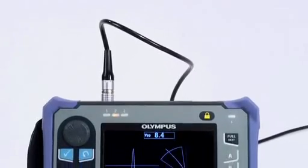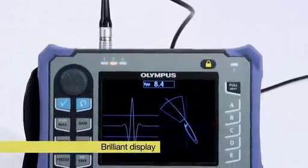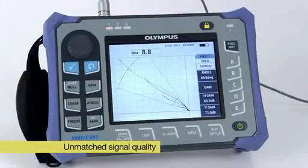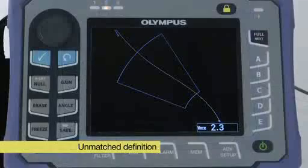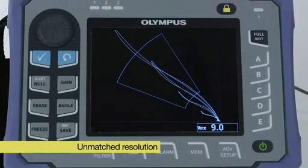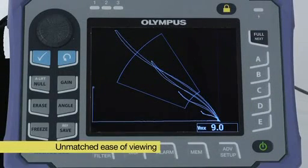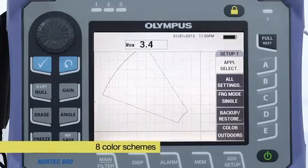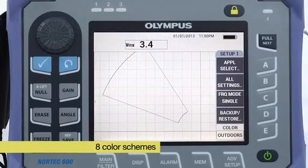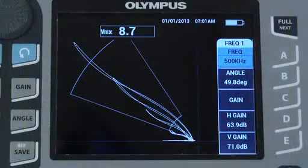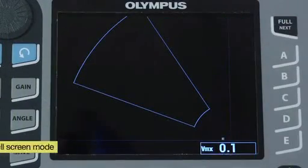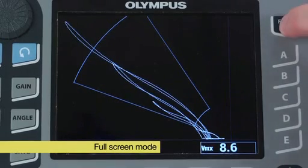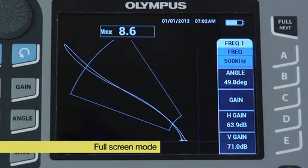The Nortec 600 offers the most brilliant display in the portable eddy current flaw detector market. No other product matches its signal quality, definition, resolution and ease of viewing in all lighting conditions. The instrument features eight color schemes including indoor and outdoor display configurations. To further enhance the signal viewing experience, the Nortec 600 features a true full-screen mode that can be toggled on and off from all configurations.